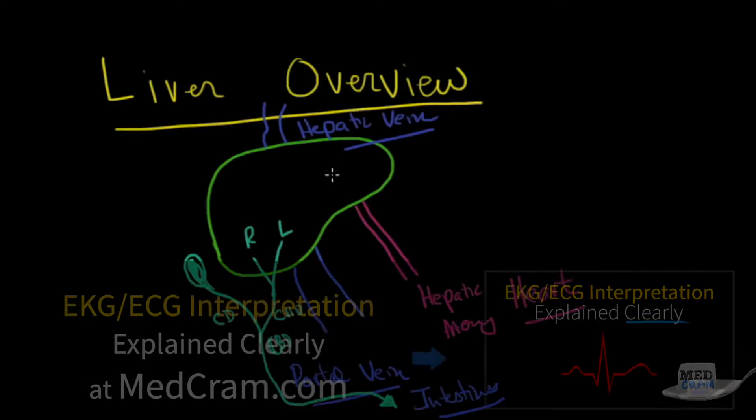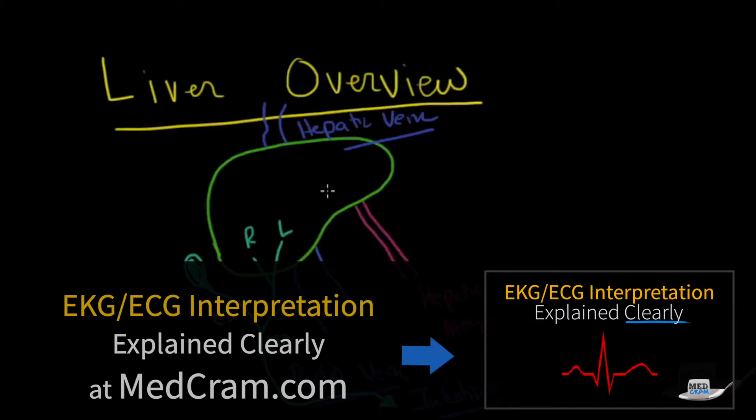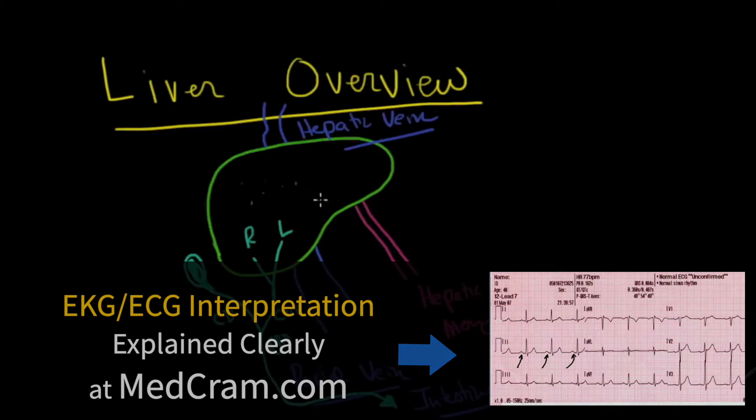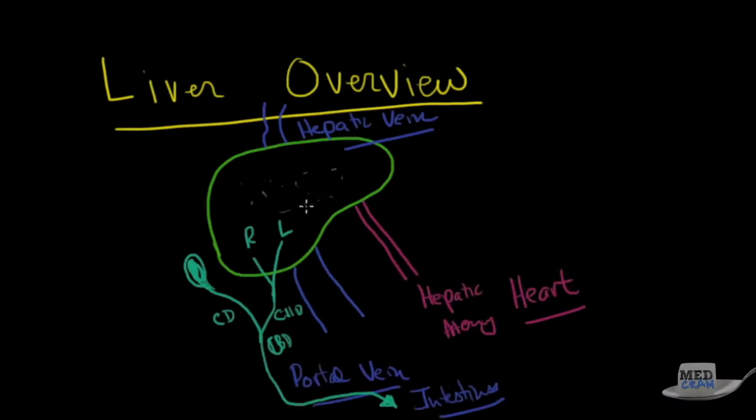So the liver really has two functions. It has endocrine functions and it has exocrine functions. The endocrine functions are hormones that are produced in the cells. They regulate glucose. They produce albumin. There's a whole bunch of things that they do. And their output gets dumped into the hepatic vein. And that goes on to the heart where it gets pumped for the whole body. The heart also pumps oxygenated blood to the liver because the liver, just like any other organ, needs oxygenated blood to survive. And that's where it gets its supply.